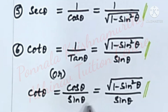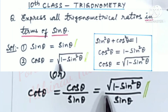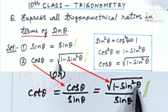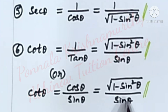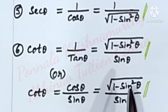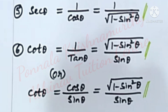Cot theta is equal to cos theta by sin theta, that is equal to under root 1 minus sin square theta by sin theta. We have only sin terms in RHS. Observe carefully.